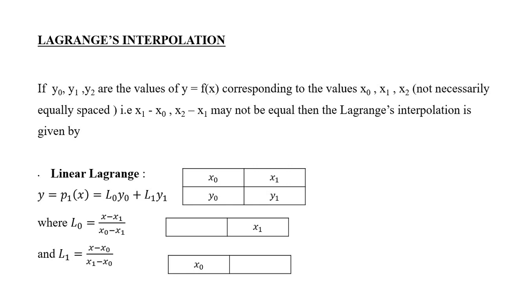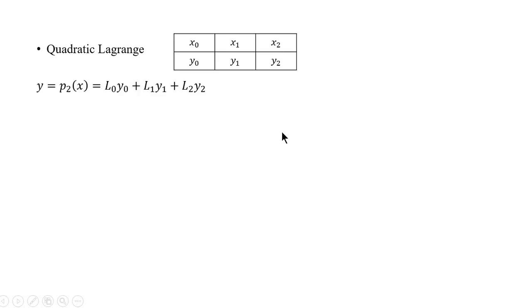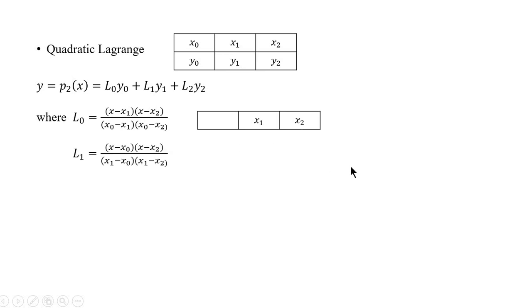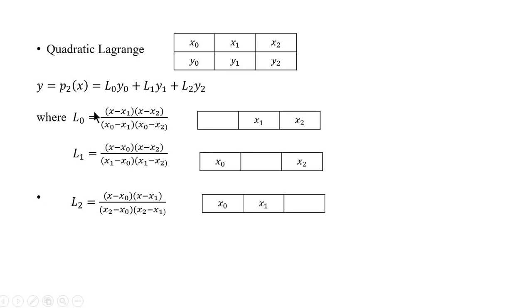After obtaining L0 and L1, substitute in y to get linear Lagrange. If you have three different points we get quadratic Lagrange and the formula goes like this: y equals L0 y0 plus L1 y1 plus L2 y2, where L0 is obtained by skipping x0 from the table. So x minus x1 into x minus x2 divided by x0 minus x1 into x0 minus x2. Similarly, L1 is obtained by skipping x1 from the table. L2 is obtained by skipping x2 from the table. Once you obtain L0, L1 and L2, substitute in this polynomial.